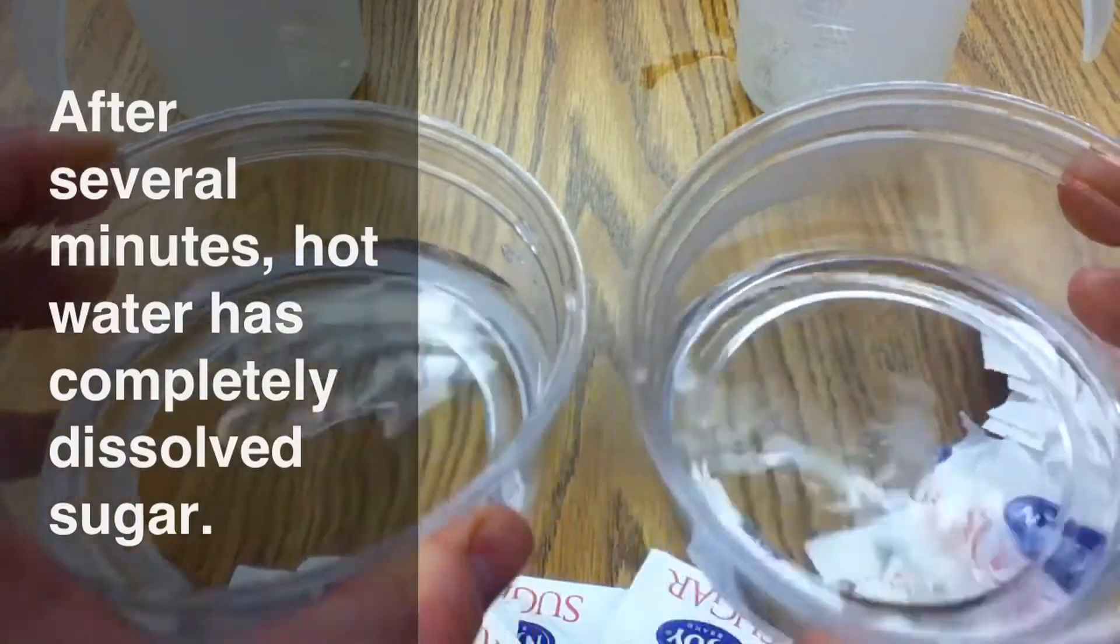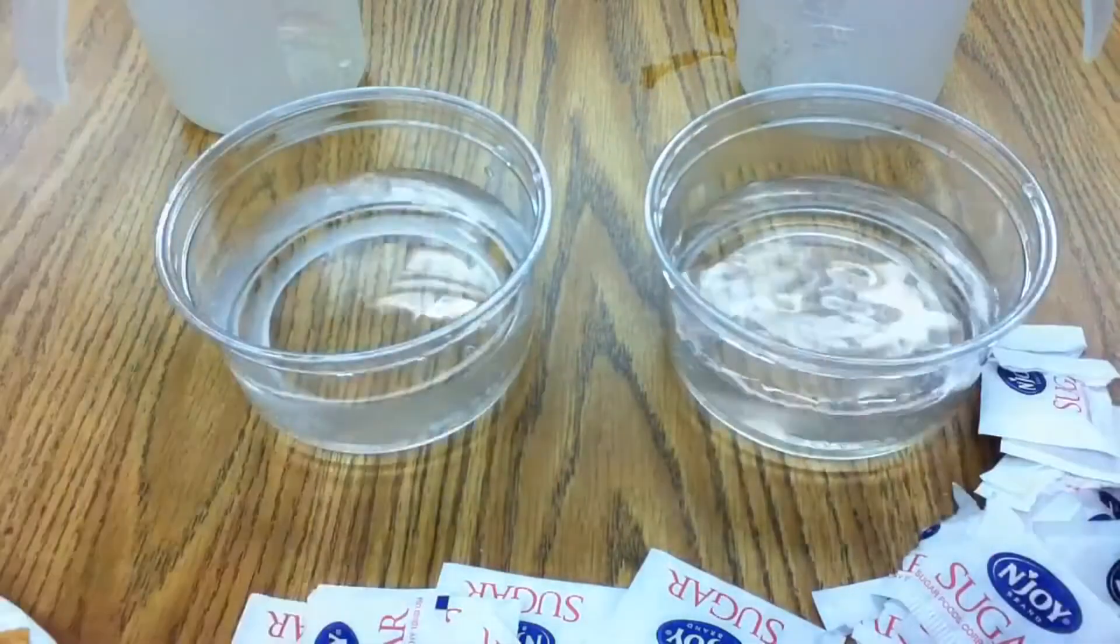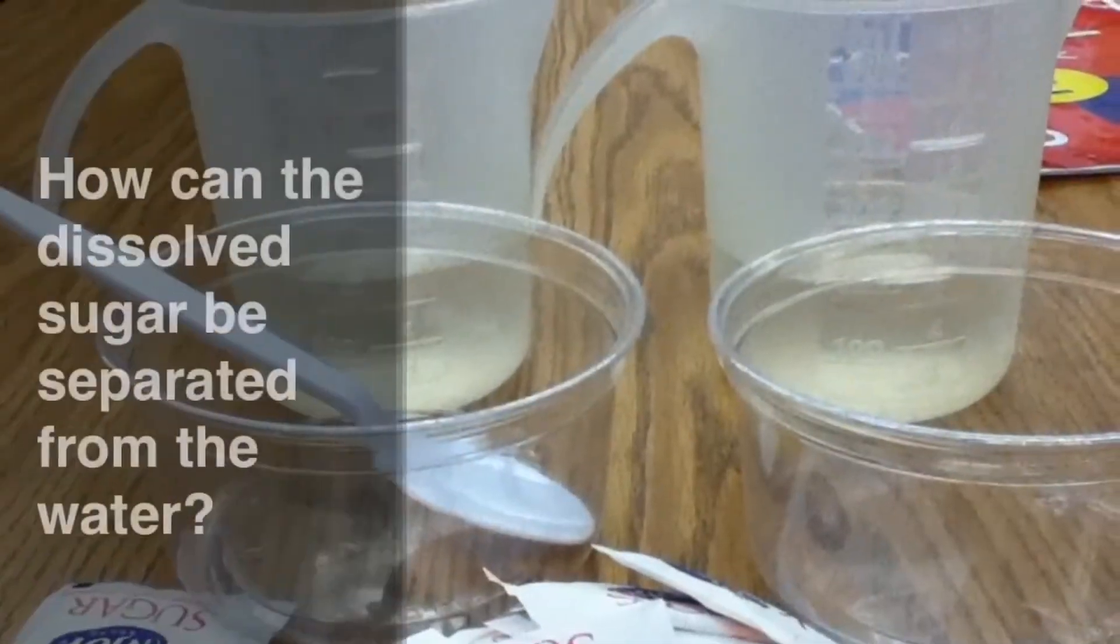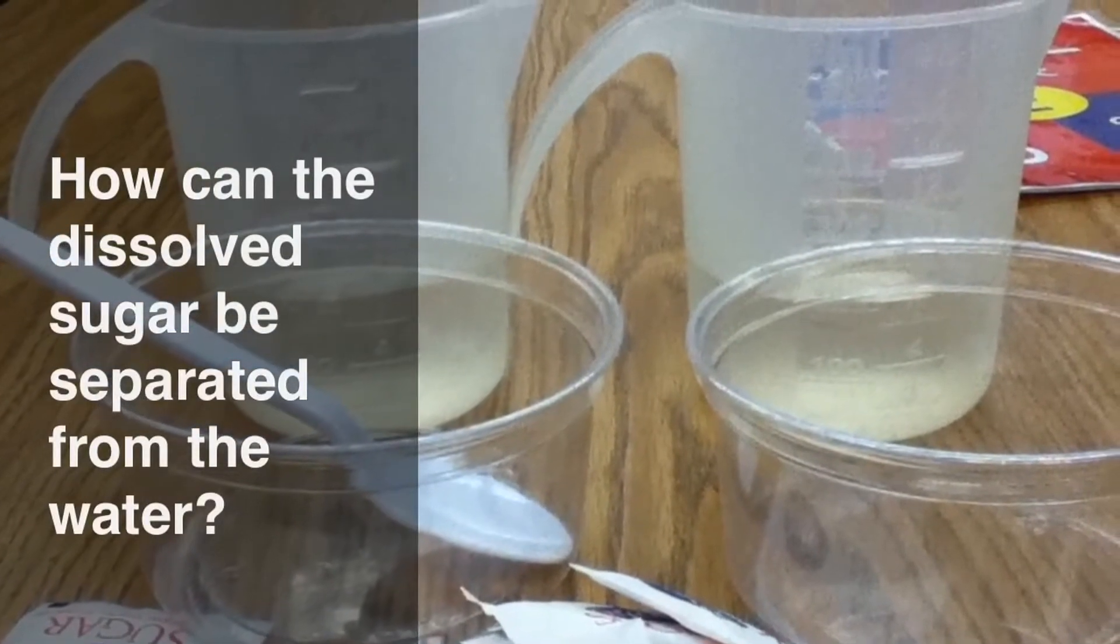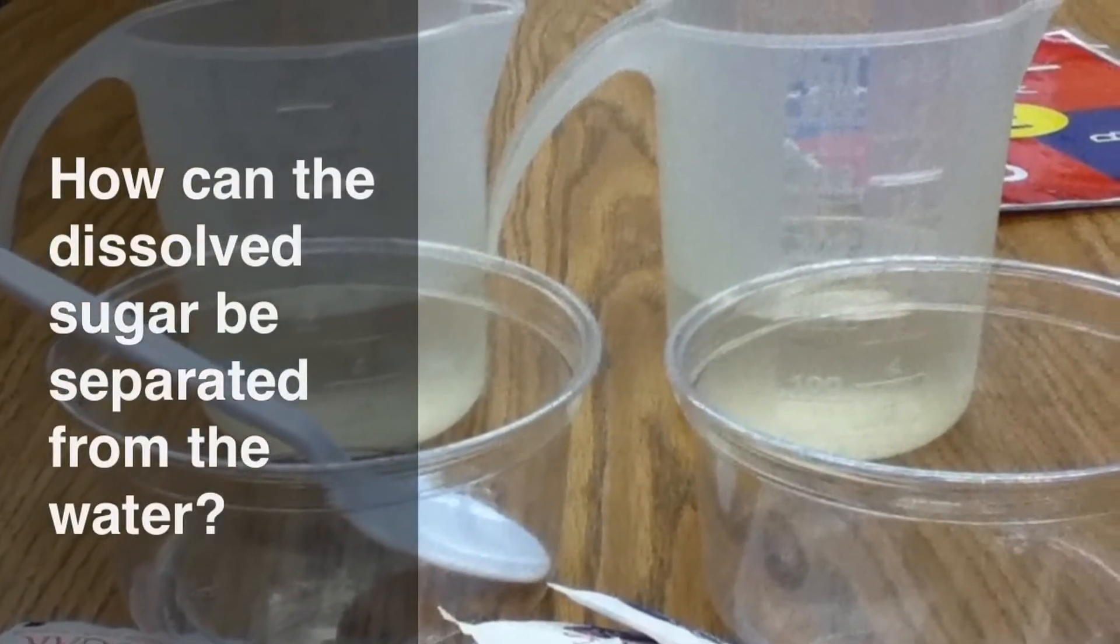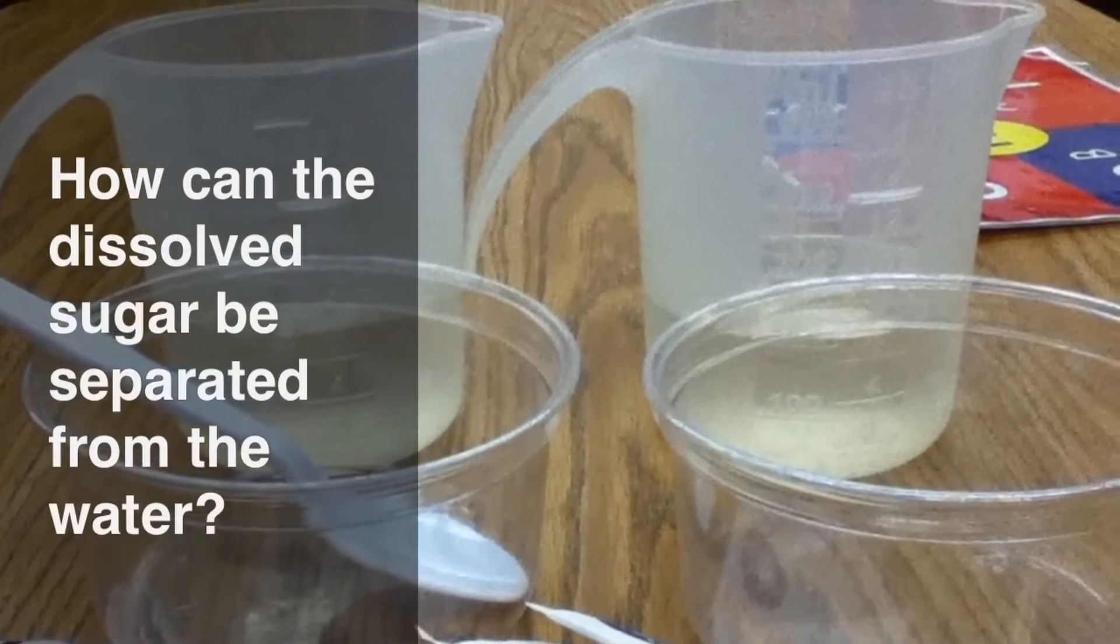We've investigated two ways in which sugar can be dissolved in water: by stirring and by adding hot water. I want you to think about how can the dissolved sugar be separated from the water. Thank you, Stem Sleuths.